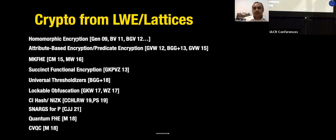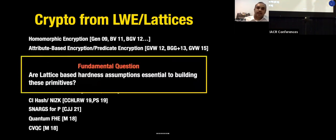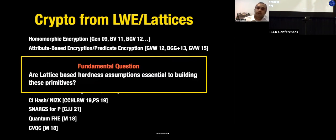The real question is: are the hardness assumptions that go into lattice-based cryptography really essential for building primitives such as homomorphic encryption? Can we build FHE based on assumptions which have no known connections to lattices — assumptions that may still plausibly be conjectured secure in the unlikely event that lattice-based hardness assumptions end up being broken?